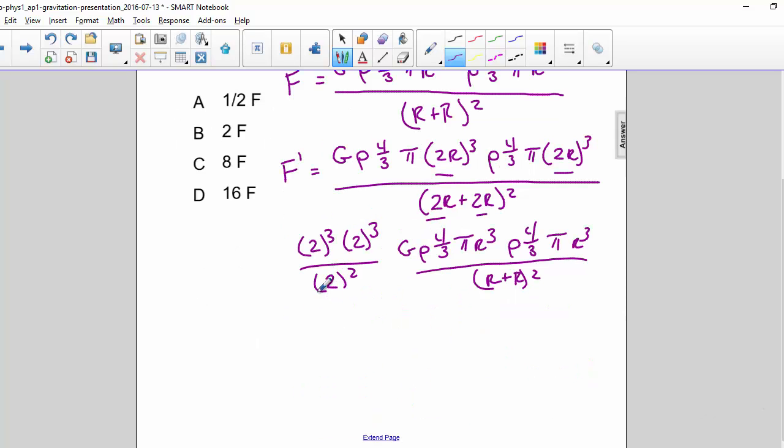So we can cancel out this 2 squared with this and we get 2 cubed which is 8 times 2 which is 16 and the rest of this is simply equal to F. So our answer is D, 16F.